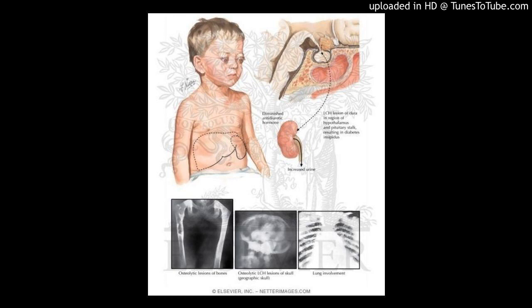LCH results from the clonal proliferation of immunophenotypically and functionally immature, morphologically rounded LCH cells, along with eosinophils, macrophages, lymphocytes, and occasionally multinucleated giant cells. The term LCH cells is used because there are clear morphologic, phenotypic, and gene expression differences between Langerhans cells of the epidermis, LCs, and those in LCH lesions, LCH cells, despite the pathologic histiocyte having identical immunophenotypic characteristics of normal epidermal LCs.